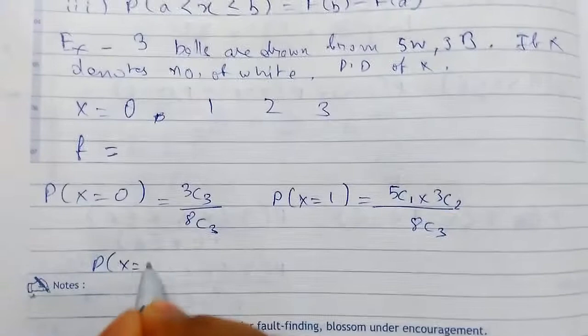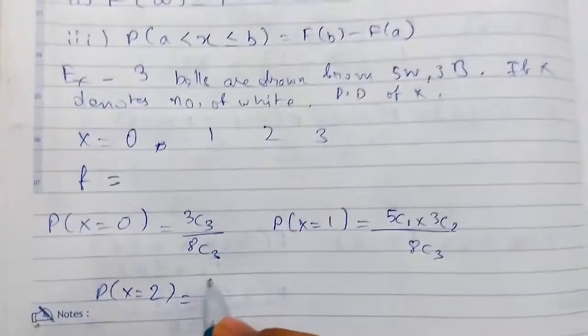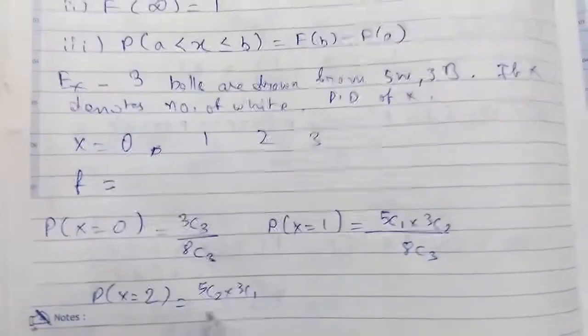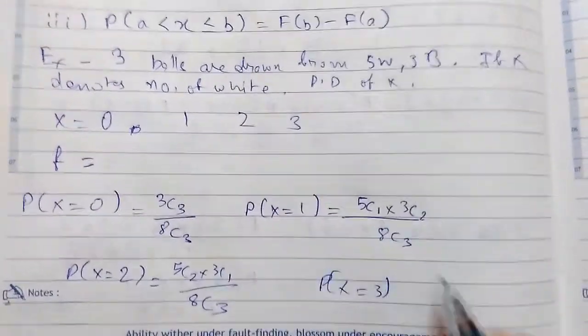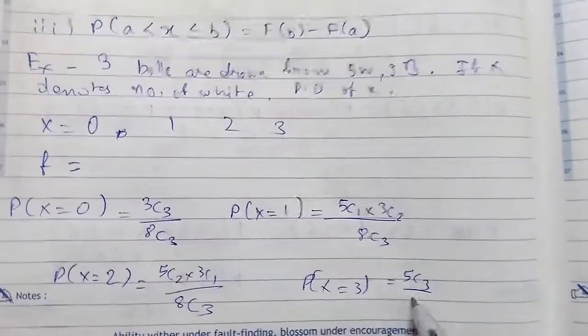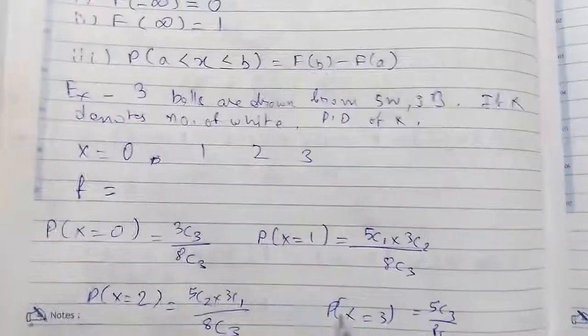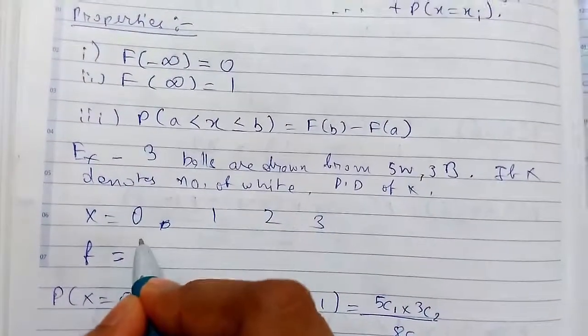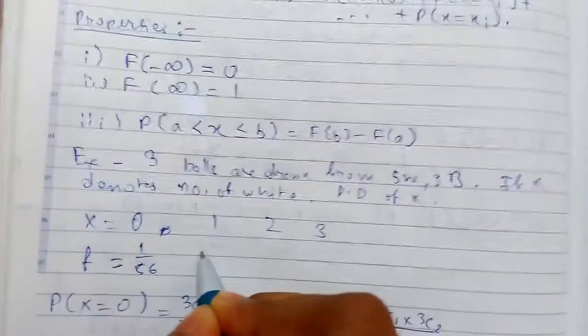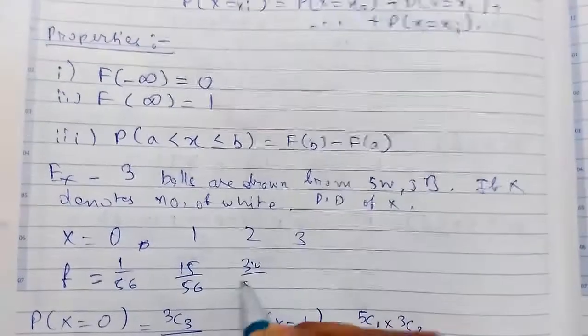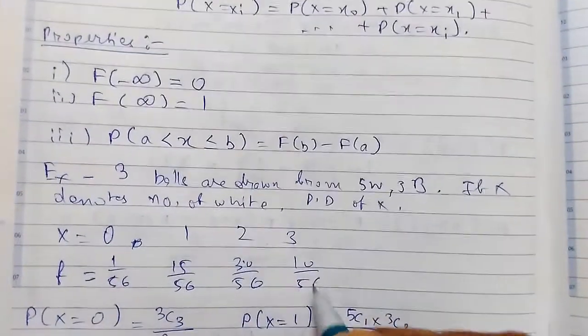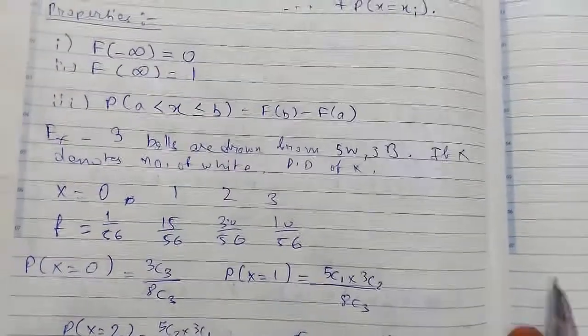So P of X equals 2, this will be 5C2, 3C1, upon 8C3. Now P of X equals 3, 5C3 upon 8C3. So calculating these values we will get: for 0 it will be 1 by 56, 15 by 56, 30 by 56, and 10 by 56.